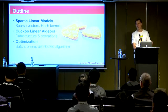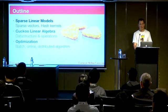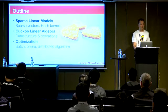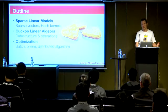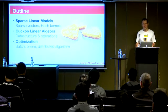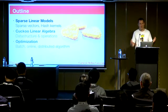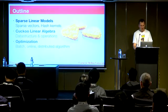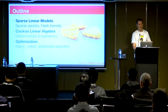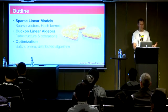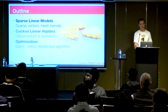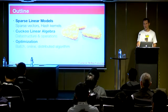If any of you has used VW, you probably know the hash kernel from there. The obvious question is: given that hash kernels exist, why do we even bother about another data structure? After that, we'll look at cuckoo hashes and how you can do linear algebra with them, and in the end I'll show you that this actually works.